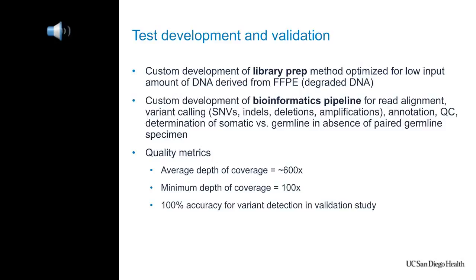Our lab is both CLIA certified and CAP certified. In order to create a test used on patient samples in a CLIA lab, you need to create what's called a lab developed test — as opposed to FDA-approved tests, most NGS-based sequencing tests are lab developed tests. As part of creating a lab developed test, we need to run a validation study to demonstrate accuracy, precision, limits of detection, and so on. The validation study also helps establish reportable ranges, quality metrics, and various processes for how we carry out the whole test.